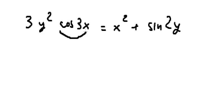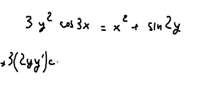Later we do first derivative of cosine 3x. For the first one you will get 3 multiply with 2y, first derivative of y, cosine 3x.